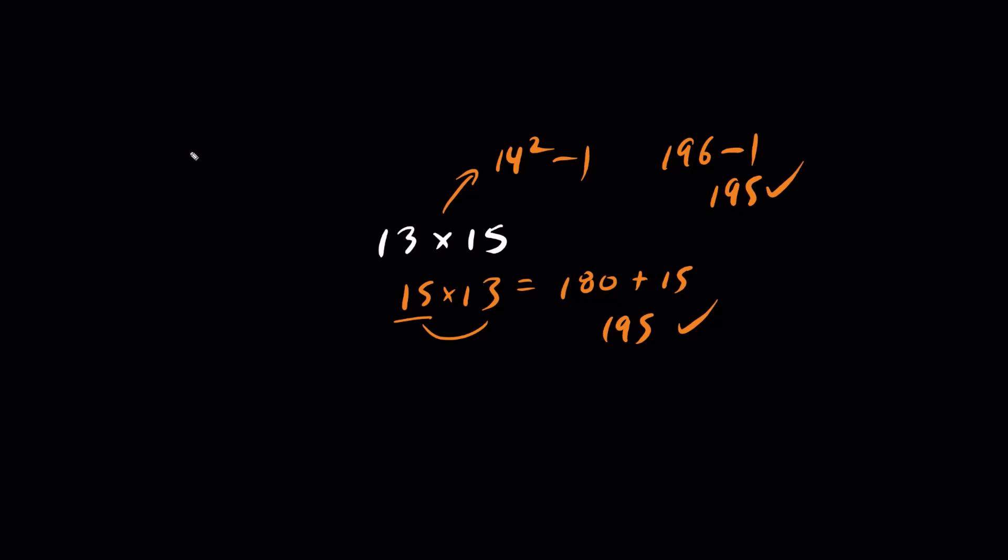Let's try another one. What if we have 14 times 16? If they're only apart by 2, take the middle number. 15 squared minus 1 is the answer. So memorize your timetables. 15 times 15 is 225 minus 1 is 224.